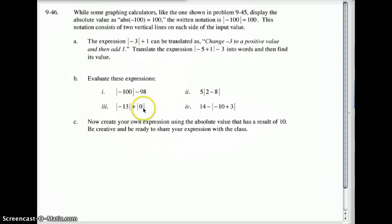Moving on to this one. Now I've got two absolute value bars, so I need to do each one individually. So the absolute value of negative 13 is 13. The absolute value of 0 is 0. So 13 plus 0 would be 13.